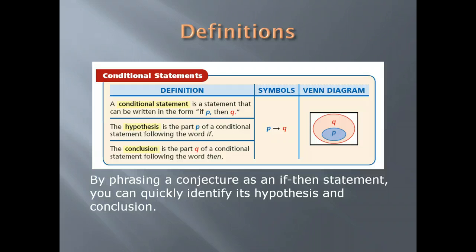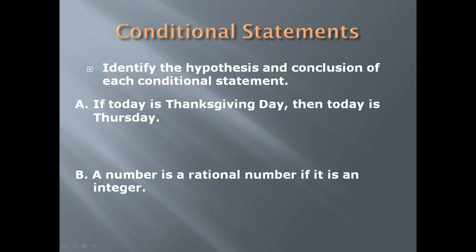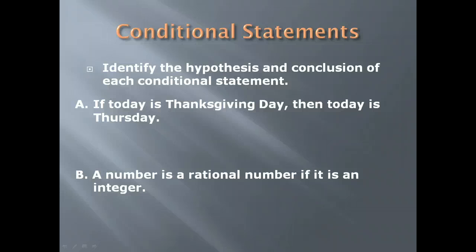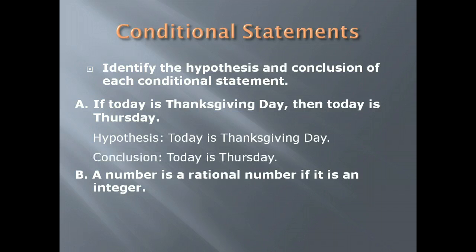By phrasing a conjecture as an if-then statement, you can quickly identify the hypothesis and conclusion. For example: If today is Thanksgiving Day, then today is Thursday. The word 'if' tells us the first half of this sentence is our hypothesis: 'Today is Thanksgiving Day.' Then 'today is Thursday' is the conclusion.